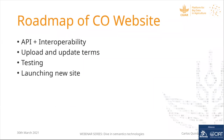To finalize the crop ontology website roadmap: our current roadmap includes the incorporation of the API plus interoperability, the upload and update of terms, managing a little bit of ontology versioning, and then testing — and of course launching the new site. These are the steps that will happen in the coming weeks.